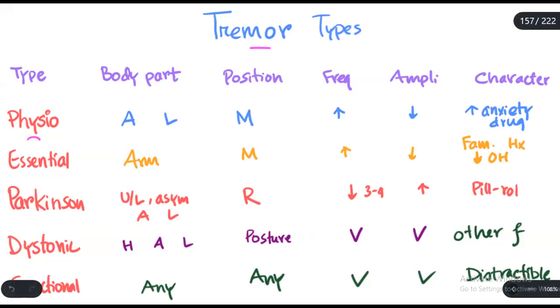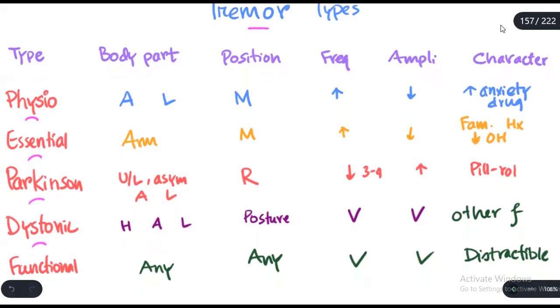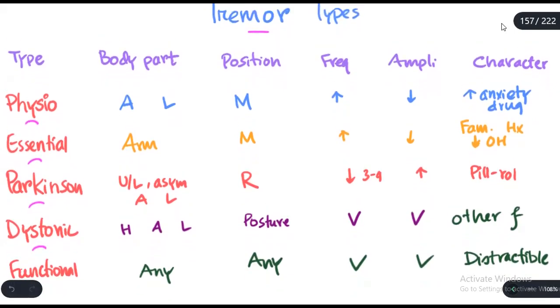Physiologic tremor, essential tremor, Parkinsonian tremor, dystonic tremor, and the last one is functional tremor. So let's try to differentiate between those different versions or types of tremor, starting from the physiologic tremor.